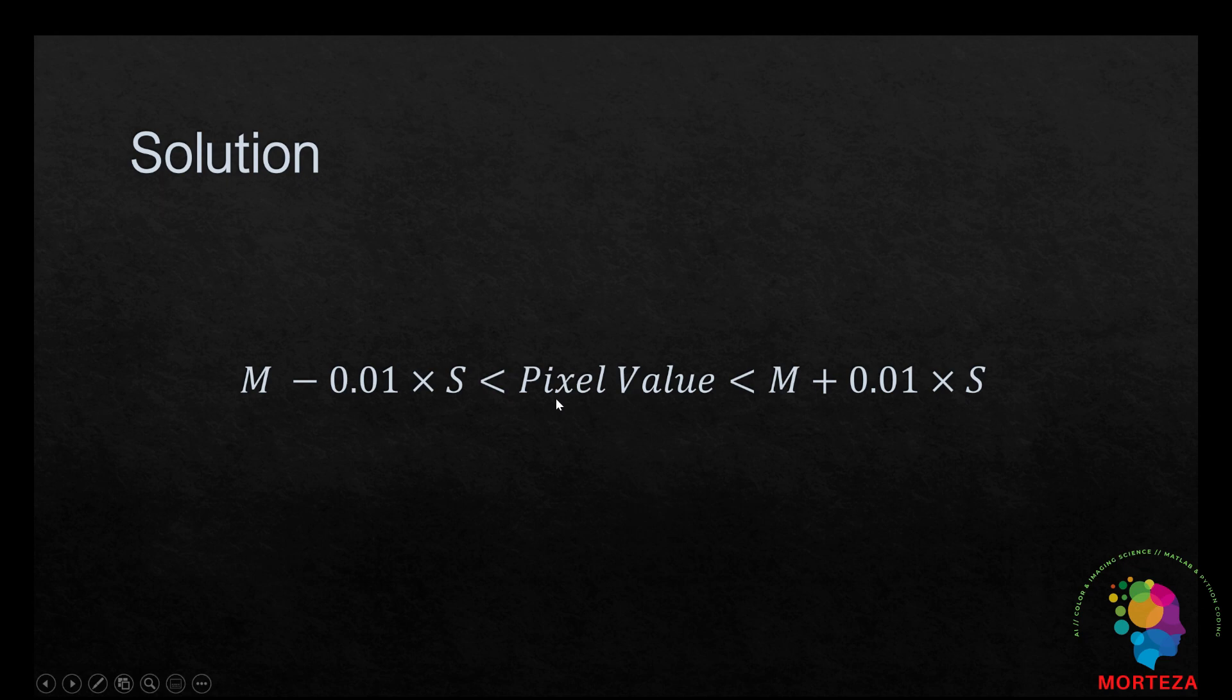Therefore, if the value of the pixel falls in the range specified above, it is not noise. Otherwise, it is noise and the process of median filtering must be applied to it.